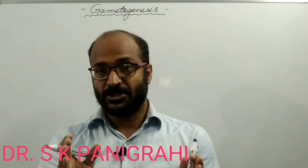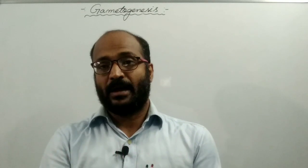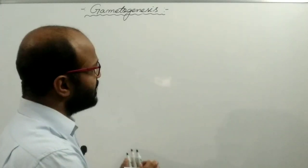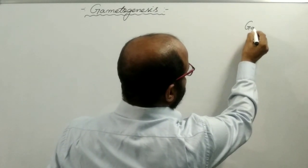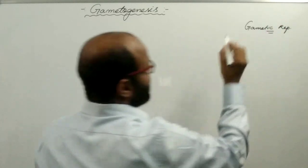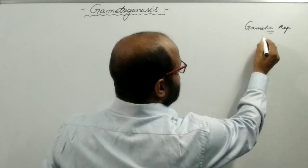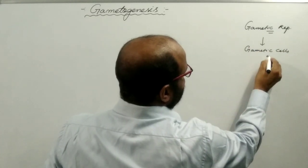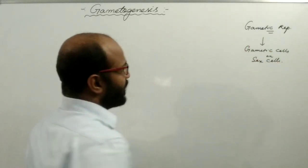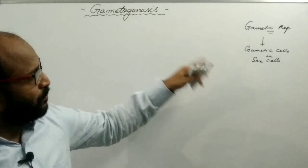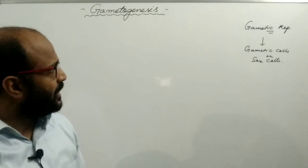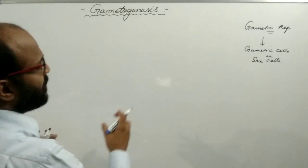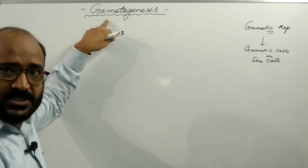Hello, welcome to my session. In this session I am talking about gametogenesis. There are so many terms involved in the gametogenesis process, which is present in sexually reproducing organisms. Sexual reproduction is also known as gametic reproduction because it involves gametic cells or sex cells. Gametes are sex cells, and these sex cells are involved in sexual reproduction, that's why it is known as gametic reproduction.